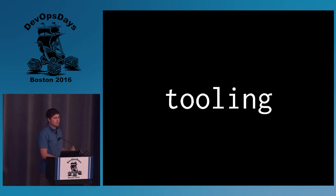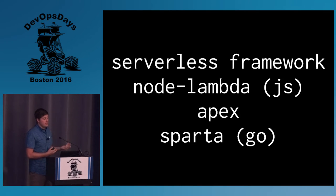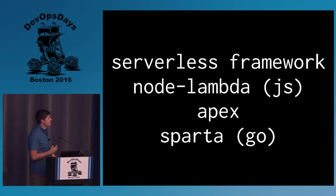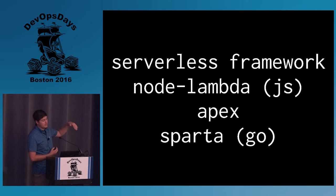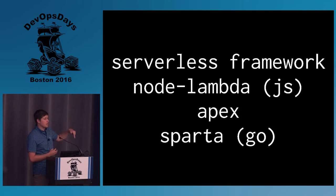Tooling — this is the most important part of the talk. Tooling right now is the biggest pain point in the serverless world. There's the Serverless Framework, which used to be called JAWS — naming your framework 'the serverless framework' is like naming your framework 'the microservices framework' in 2012, you don't own the term. But it's actually a pretty decent product — it supports all the different runtimes. Node Lambda is JavaScript only but also decent. Apex is written by TJ Holowaychuk in Go but supports all runtimes and uses Terraform. There's also Sparta, written in Go for Go only — if you're a Go person, check it out.